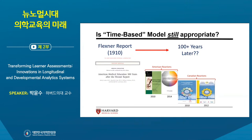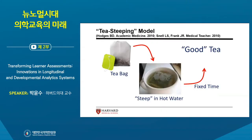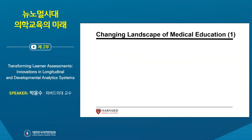Around 2010 through 2014, there was a significant movement toward competency-based approaches in education. One analogy people have used for this shift is a tea-steeping model: a teabag is steeped in hot water for a fixed amount of time and tea is automatically produced. This analogizes medical education, where a medical student is placed in medical school for a fixed four to six years, with the assumption that they graduate as a competent physician.